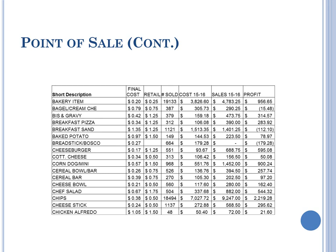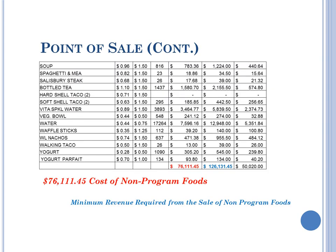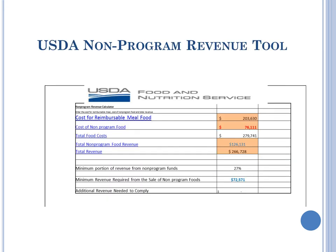This slide shows what is most important for the tool at the bottom. The number in red is the total cost for the non-program foods. The next number in blue is the revenue made for the non-program foods. If you look at these numbers, you will see in the tool how the numbers were inputted. Once we take the cost of non-program foods in red away from the total cost, we are provided the minimum portion of revenue from non-program foods as a percentage. These two numbers determine this percentage and do not change any other numbers or formulas in the system. Looking at the portion of revenue from non-program foods and total revenue, the minimum revenue required from the sale of non-program foods is computed. Based on the tool, the food service director knows that she is in full compliance. Our biggest concern is the cumulative numbers, not every individual item.